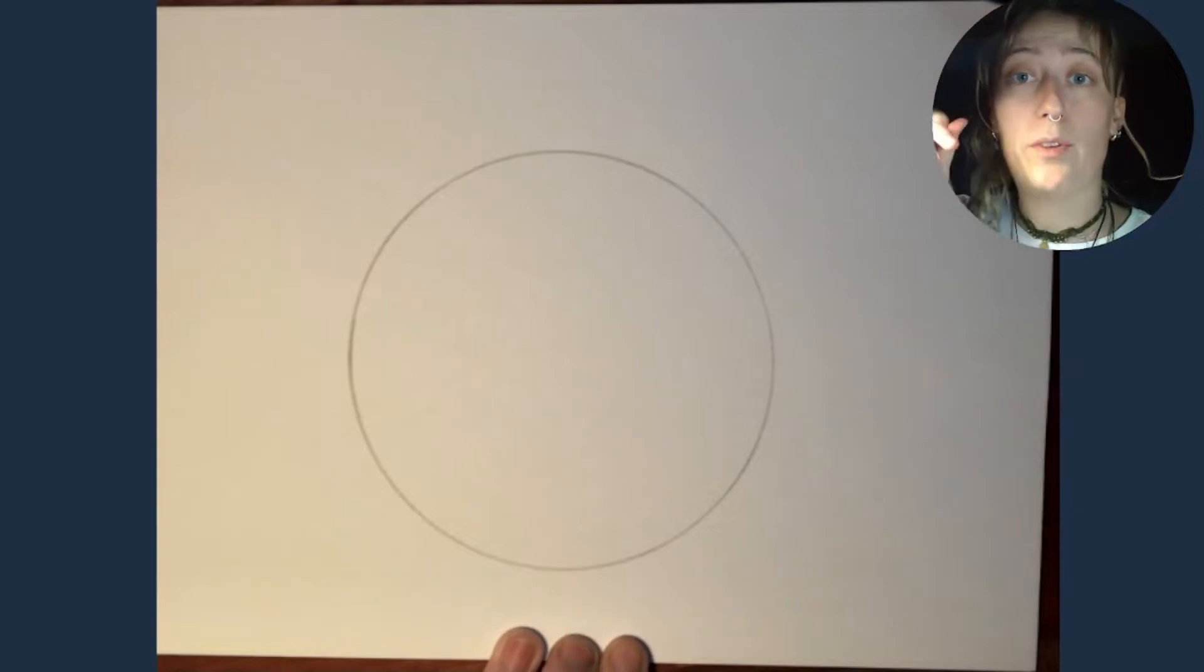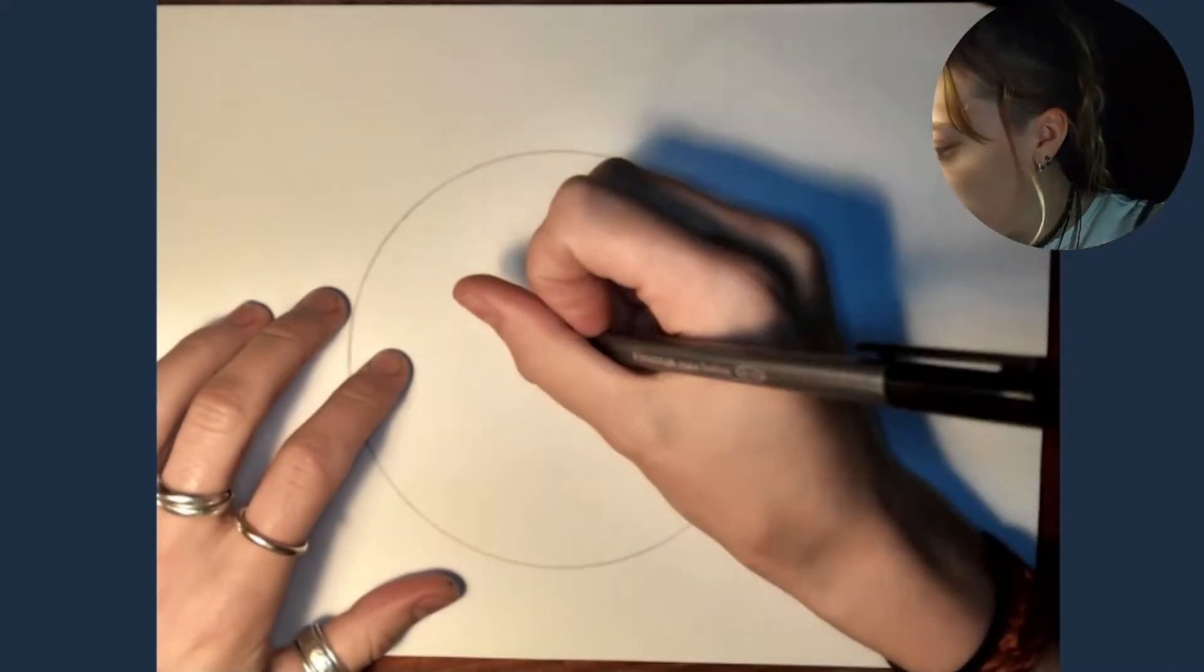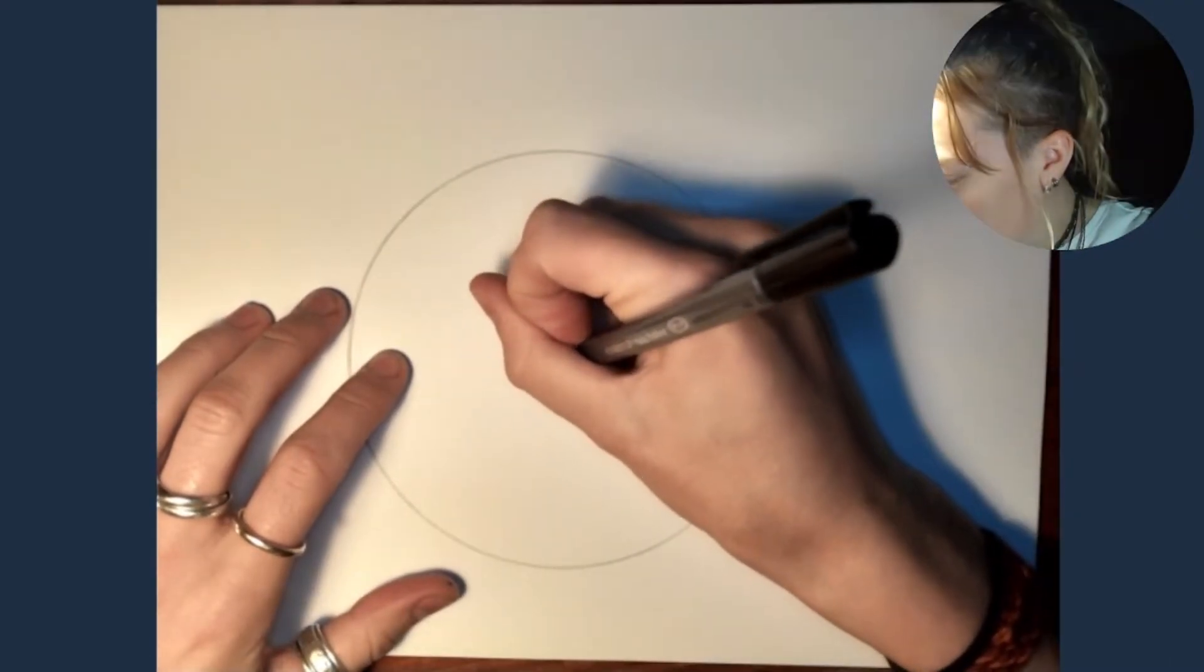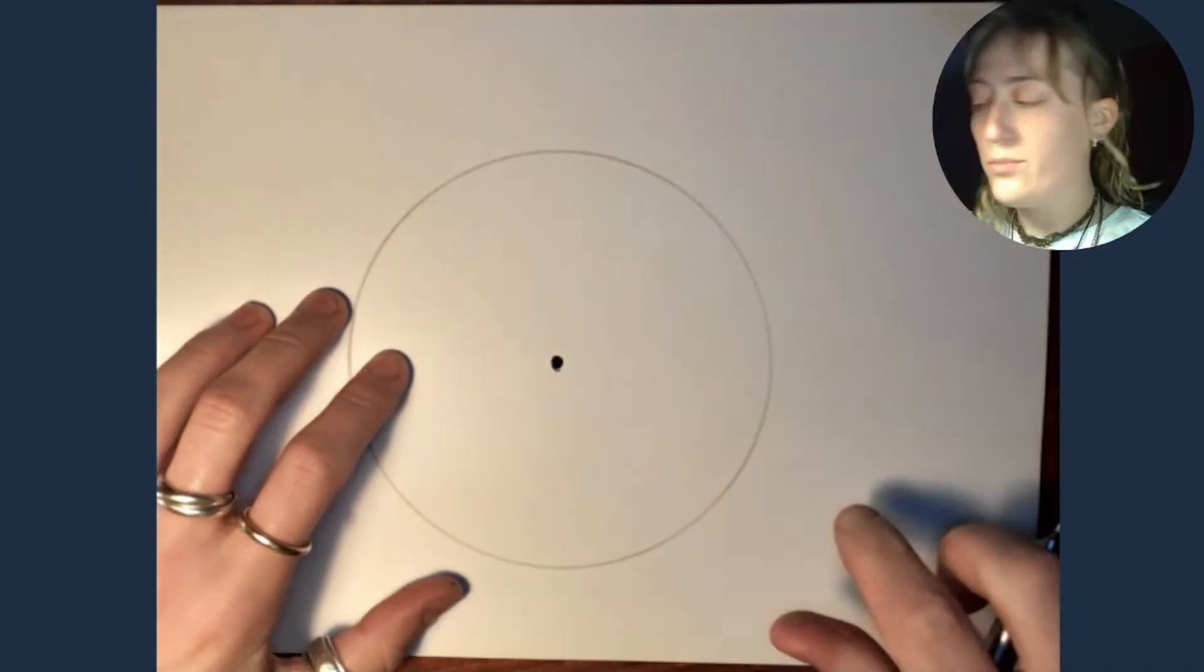Now, I want you to find the center of the circle, so the point that the compass pierced the paper. And I want you to color it in quite strongly so that we know exactly where the center of the circle is. So taking your pencil, you're going to find the center and you're going to draw a nice big dot in the center of the circle.